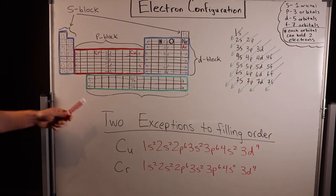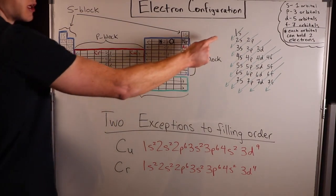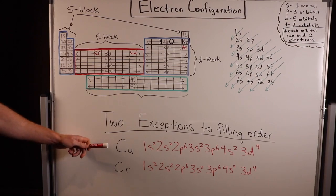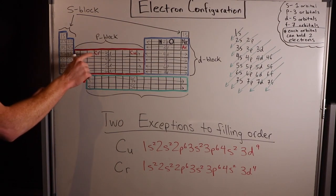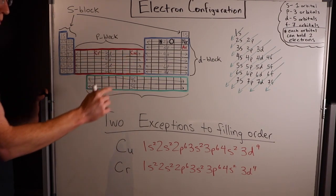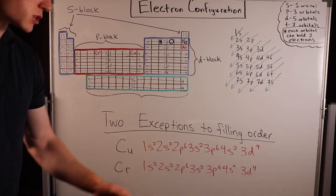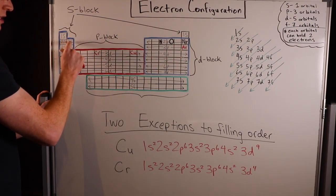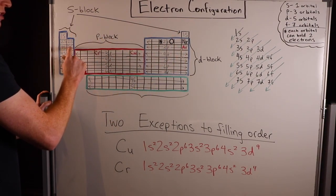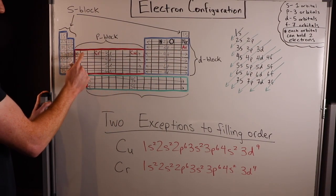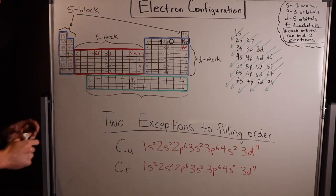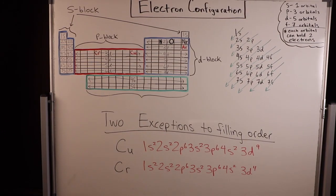I'll end this video by mentioning two important exceptions to the filling order. Remember, this is the order in which orbitals are filled with electrons. But the two exceptions to this are copper and chromium. I've written these two elements up here in the periodic table. Here's chromium and here's copper. I went ahead and wrote out their expanded electron configurations. I went 1s2, 2s2, 2p6, 3s2, 3p6, 4s2, and then 3d4 for chromium and 3d9 for copper. So why are these exceptions? Well, actually, what I've written here is not correct.